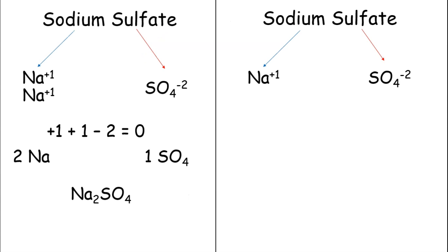In addition, there's one other way to go about writing your formulas. Once you find the charges, so sodium is Na+1, sulfate is SO4-2. What you can do is you can cross out those charges. Then what you want to do is if you're given a polyatomic ion, put parentheses around it, just so you're good to go.